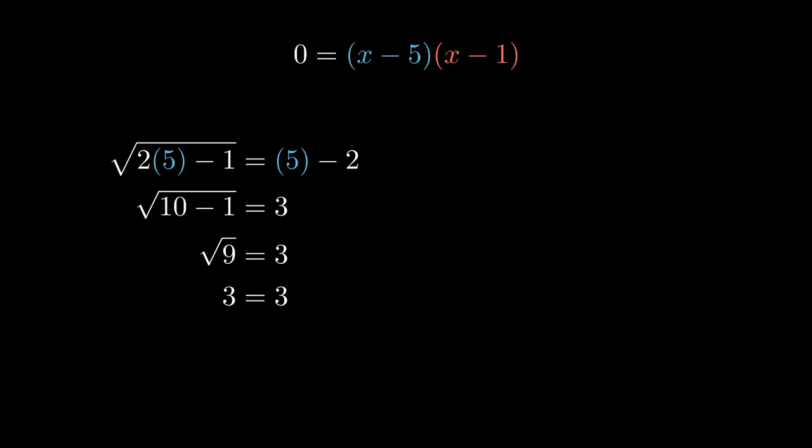However, if we instead plug in x equals 1, there's a problem. We get root 2 times 1 minus 1 equals 1 minus 2. So root 2 minus 1 equals negative 1, root 1 equals negative 1, and 1 equals negative 1.